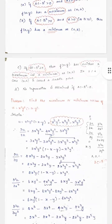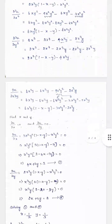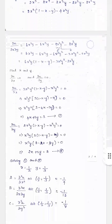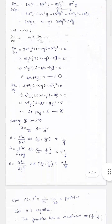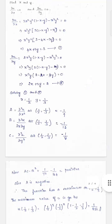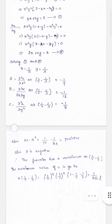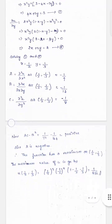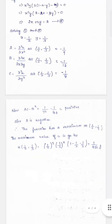Here, I have found the first derivatives, equated them to 0, and solved for x and y to get the critical point. I computed A, B, and C at that point — getting specific values for each. After finding AC - B², which is positive, and noting that A is negative, I concluded this problem has a maximum. Substituting the critical point into the function gives the maximum value. This completes the solution.